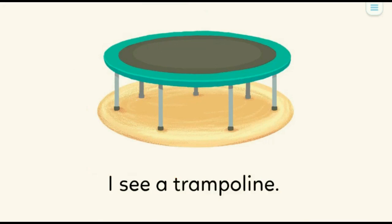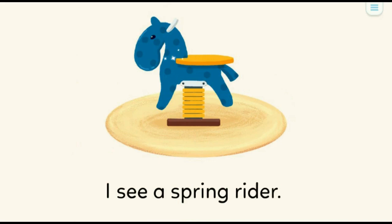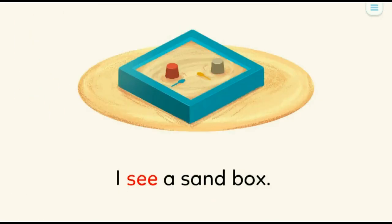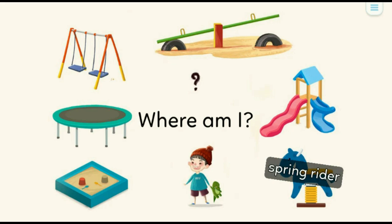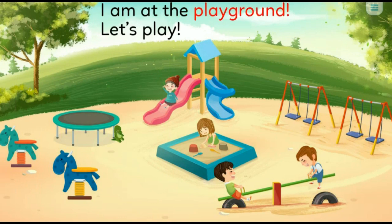Trampoline. I see a spring rider. Spring rider. I see a sandbox. Sandbox. Where am I? Sandbox, trampoline, swing set, seesaw, slide, spring rider. I am at the playground! Let's play!